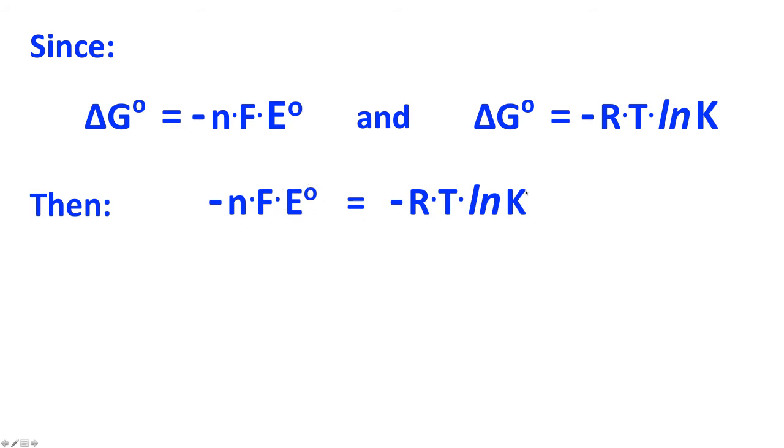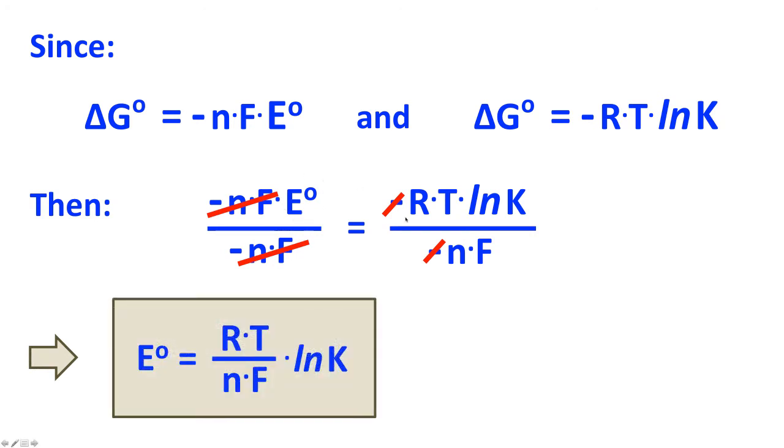In other words, negative NFE naught equals negative RT ln of K. And note, we now have a relationship between E naught and K. And there's a couple different ways that we can set this up and solve the equation. We can take this equation, divide both sides by negative NF. If we divide both sides by the same thing, it's still an equation. And then canceling out similar things on both sides, that then reduces to E naught equals RT over NF times ln of K. So here's one way of writing this equation, E naught in terms of K.